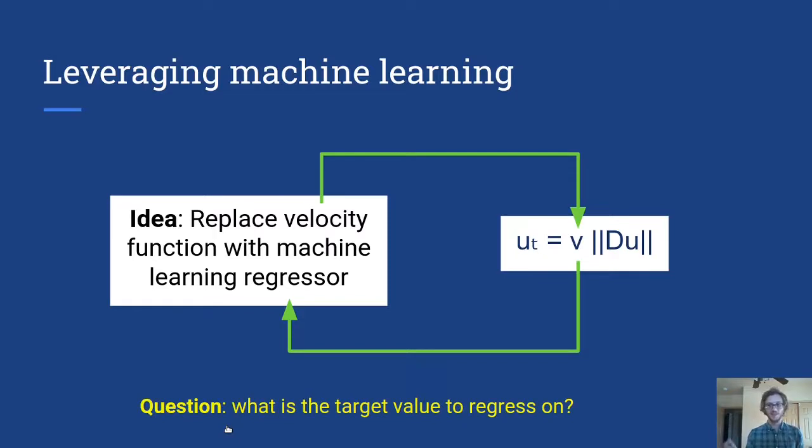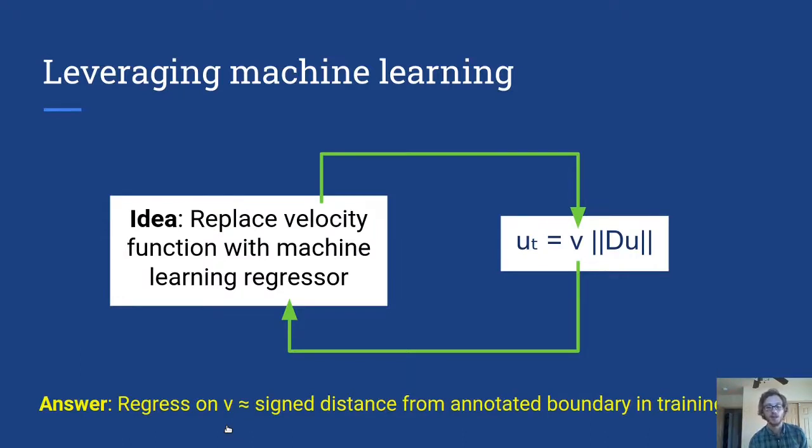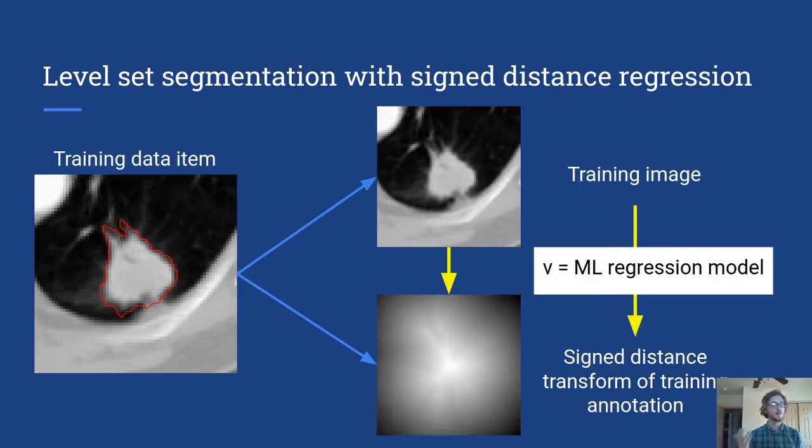Okay that sounds like a good idea but what do we do? What is the target value that we should be regressing on rather is the question we want to ask or to know the answer to. And the answer is that we regress on the signed distance value from the annotated boundary in the training data.